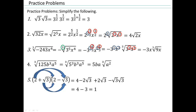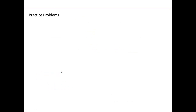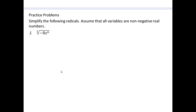This is an interesting observation. You have two radical terms, but when they multiply, there is no radical term. So 2 plus square root 3 is called the conjugate of 2 minus square root 3, and vice versa. Try that on your own — pause the video here and go ahead and do that on your own.